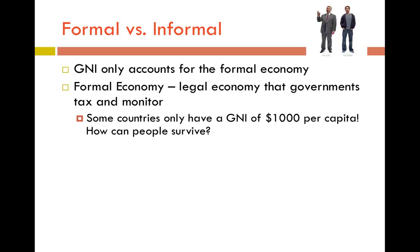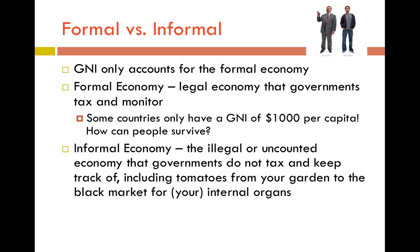Some countries only have a GNI of $1,000 per capita. How can people survive? Well, in a lot of developing countries, they have a very large informal economy — the illegal or uncounted economy that governments do not tax and keep track of, including everything from tomatoes from your garden to the black market for internal organs. In the United States, if you shovel your neighbor's sidewalk or cut their grass and they just pay you cash without tax, that would be considered the informal economy. On an extreme level, the black market would be another example of the informal economy.